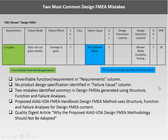These two mistakes — unverifiable requirements and causes without specifications — are commonly produced by the structure, function, and failure analysis methodology developed in Europe, which the proposed AIAG-VDA handbook suggests adopting in the U.S. Richard plans to publish an article in Quality Digest in the next week detailing why this methodology consistently leads to these problems, and invites readers to submit comments to AIAG before end of February.